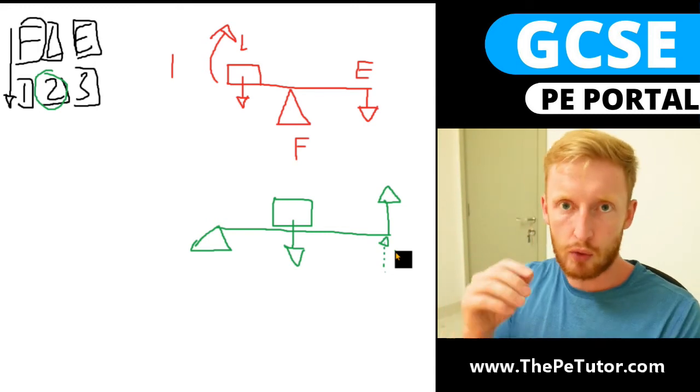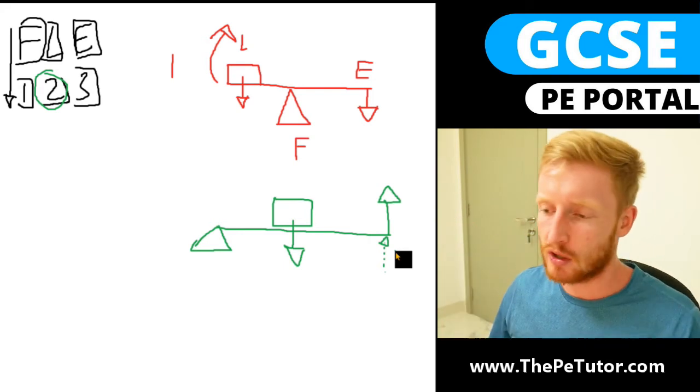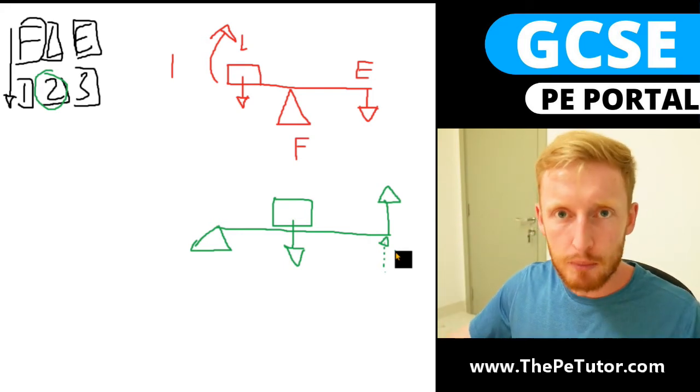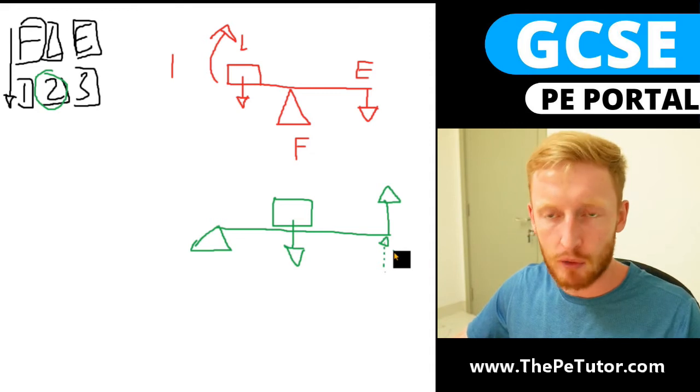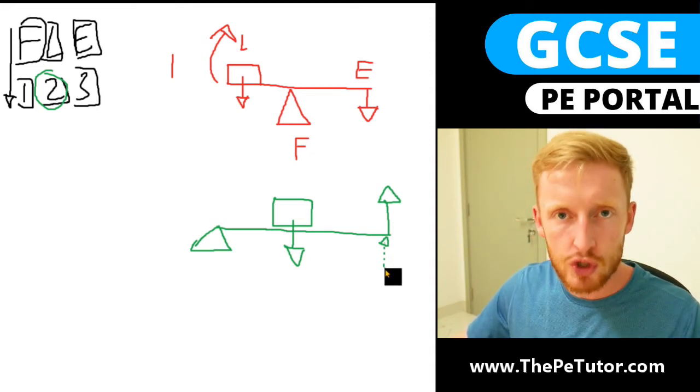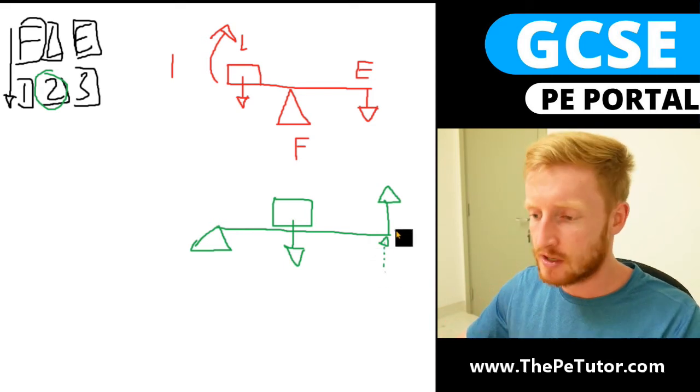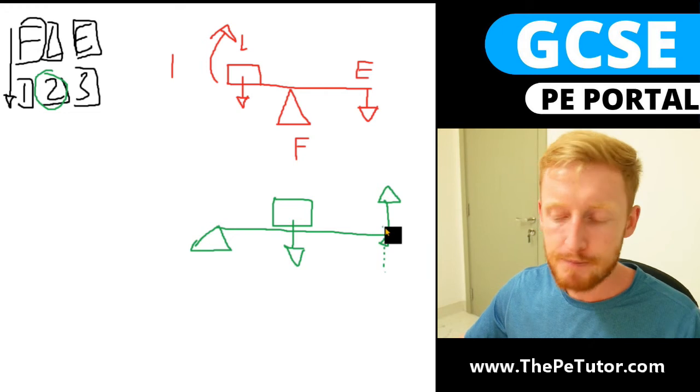But in the body muscles can only pull on a bone, they can only shorten in order to move the bone. They can lengthen to allow for movement during eccentric contractions but what we're concerned more about here is overcoming a resistance in concentric contraction. So the muscle can't push, it can only pull.